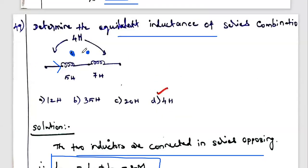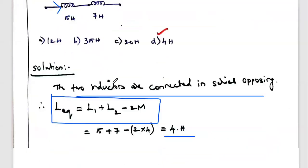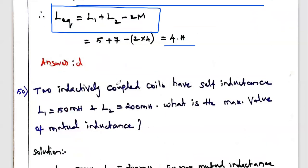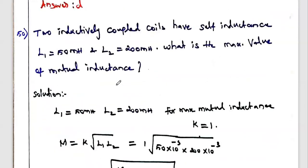If both dots were in the same entering direction, it would be series aiding. In series aiding, the total inductance is L1 + L2 + 2M. This is a repeated and important concept to remember.